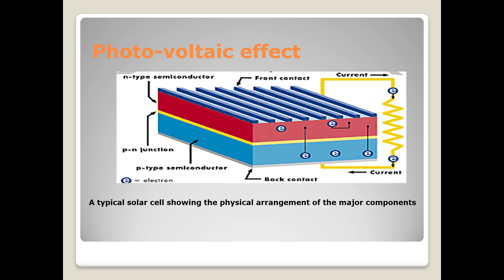The combination of n-type and p-type semiconductors thus constitutes a photovoltaic cell or solar cell. All such cells generate direct electric current which can be converted into alternating current as desired. This is a typical solar cell showing the physical arrangement of the major components.